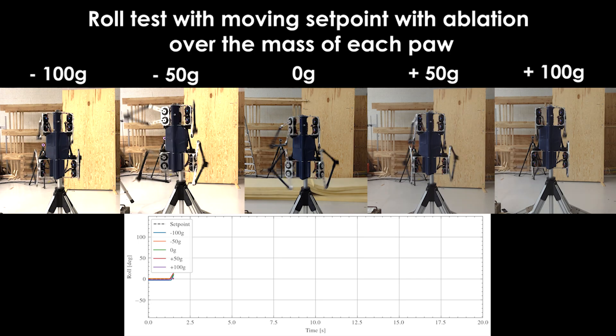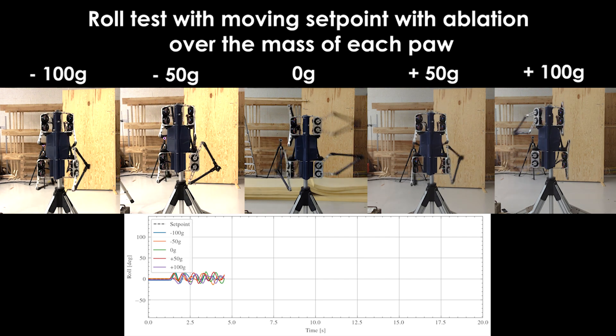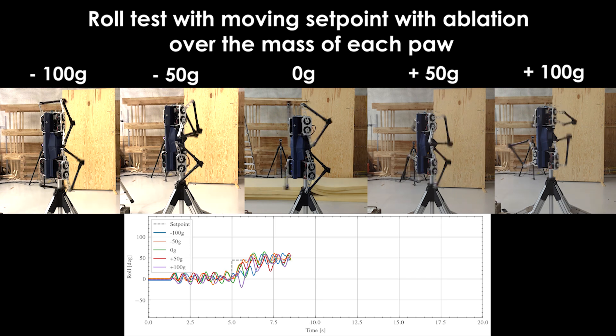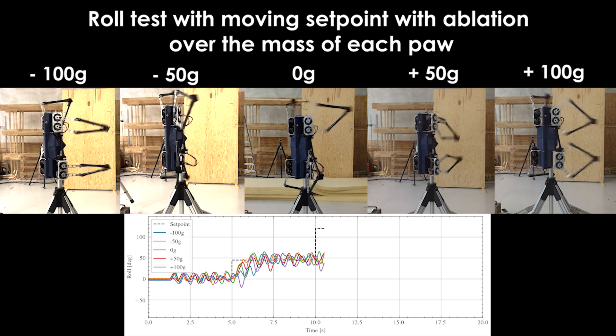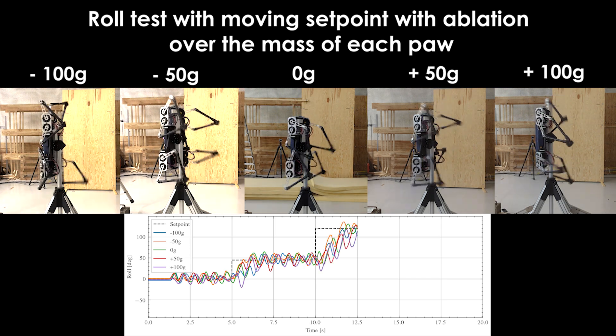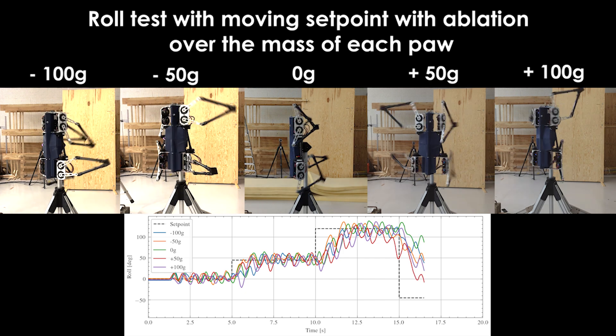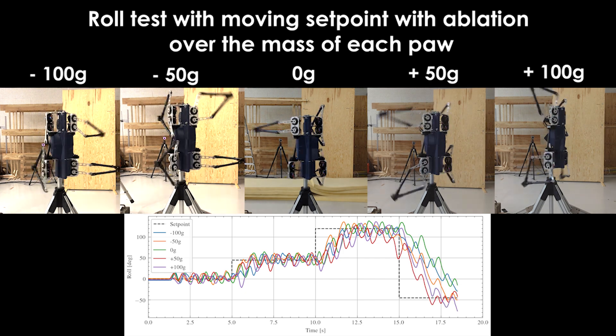To assess the policy's robustness, an ablation study was conducted by attaching varying masses to the robot paws. The test incorporated dynamic roll orientation setpoints demonstrating the policy's resilience to parametric uncertainties in mass and inertia, in addition showcasing its robustness to the disturbance introduced by the rod and gravity which was not part of the training simulation, while tracking a changing setpoint.